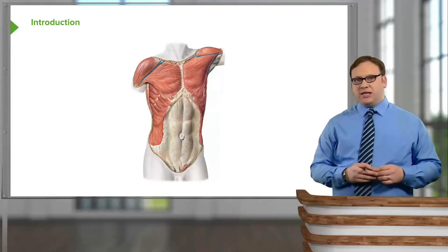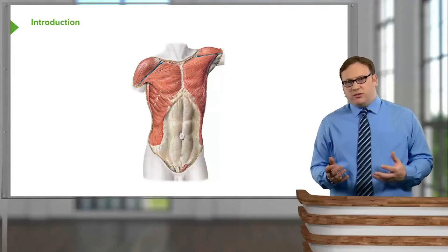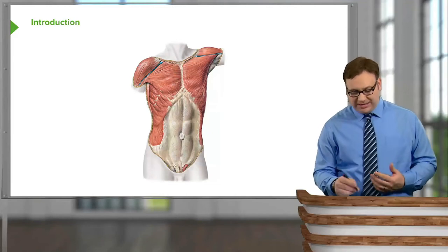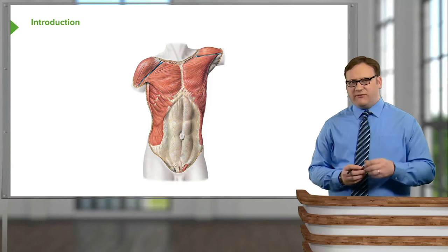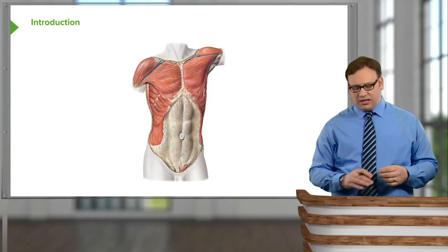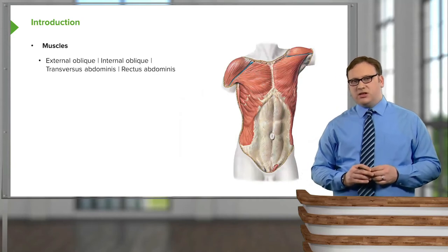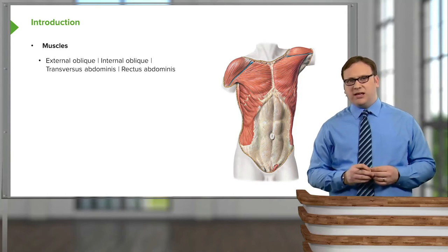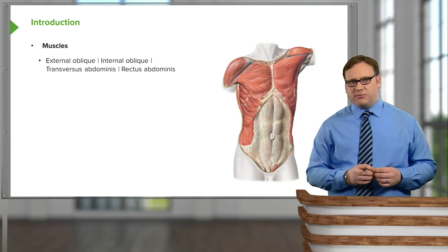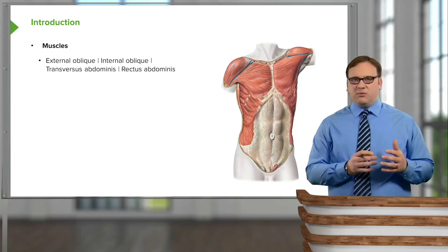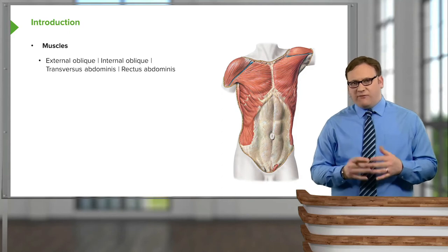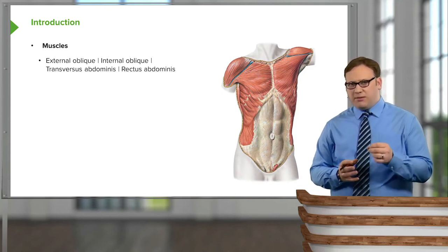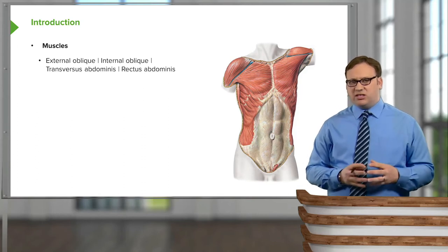In this lecture, we're going to look at the anterolateral abdominal wall. On the screen we can see a torso with the skin removed to see the musculature and underlying fascia within the trunk. Specifically, we're going to look at a series of muscles that make up this abdominal wall — internal oblique, external oblique, transversus abdominis, and rectus abdominis — their attachments, where they originate and insert, what function and movements they carry out, and their important roles for the correct functioning of the abdomen.